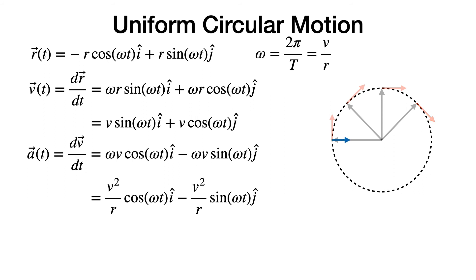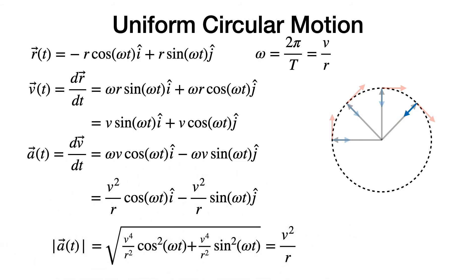We can now examine the acceleration by taking the time derivative of the velocity. Substituting ω equals v/r, the result is v²/r cosine(ωt) i-hat minus v²/r sine(ωt) j-hat. At t equals 0, the acceleration is v²/r in the i-hat direction, pointing radially inward. At t equals T/4, ωt equals π/2, and the acceleration is minus v²/r j-hat — again pointing radially inward, this time in the downward direction.